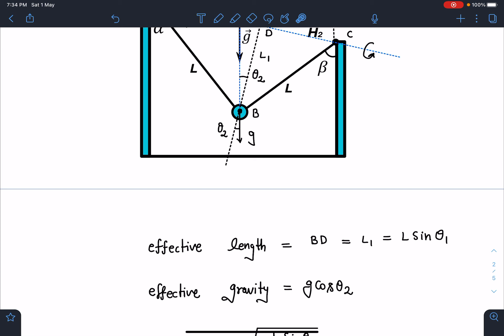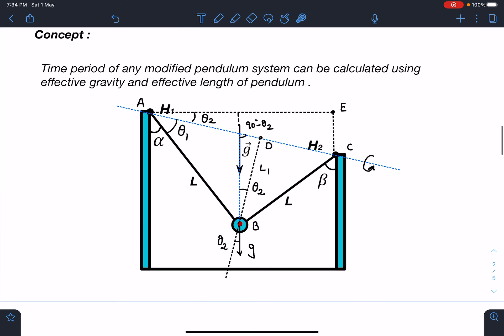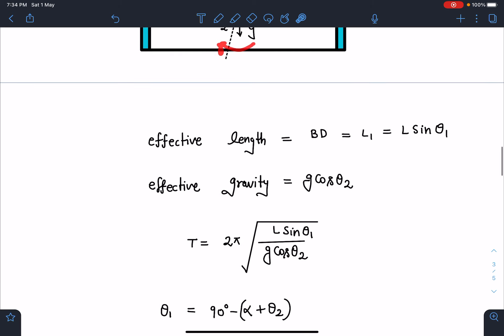Effective gravity here I can say if this angle is theta2, this will be 90 minus theta2. So this angle is theta2 or this angle is theta2. So effective gravity component in this direction is going to be g cos theta2. So my entire time period will be reduced to directly I can write 2π under root of L sin theta1 by g cos theta2.